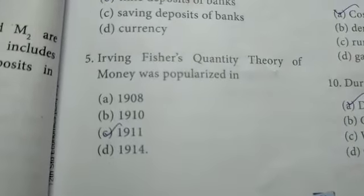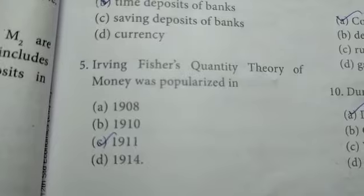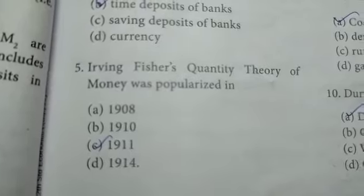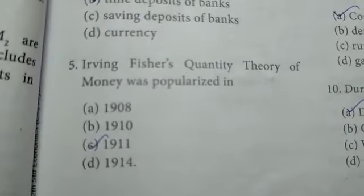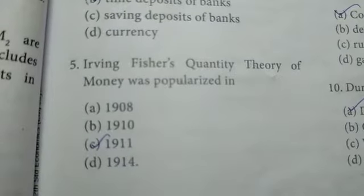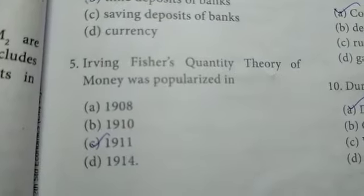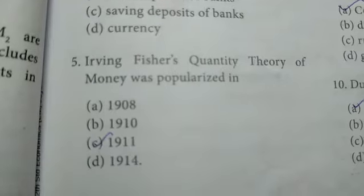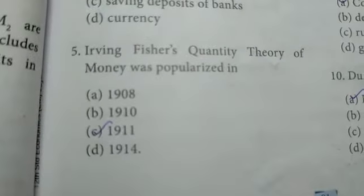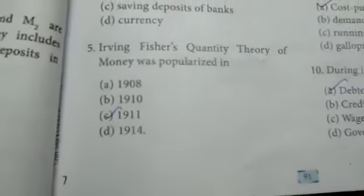Irving Fisher's quantity theory of money was popularized in the year 1911.